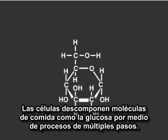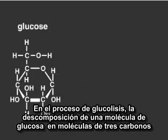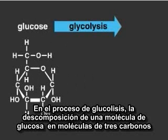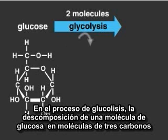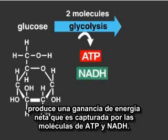Cells break down food molecules, such as glucose, through multi-step pathways. In the process of glycolysis, the breakdown of one glucose molecule into two 3-carbon molecules produces a net gain of energy that is captured by the molecules ATP and NADH.